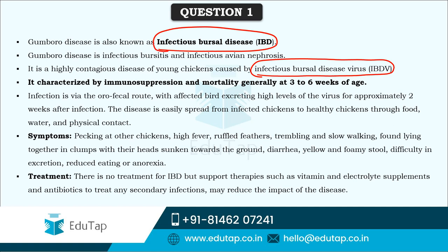Bursa is a lymphal gland in poultry birds and this disease causes inflammation and various other infections in that bursa. This is a highly contagious disease of young chickens and mortality can be seen generally at the age of three to six weeks. This disease is transmitted via the orofecal route — either orally or via fecal route — with the affected bird excreting high levels of virus for approximately two weeks after infection, allowing it to spread easily through food, water, or even physical contact.